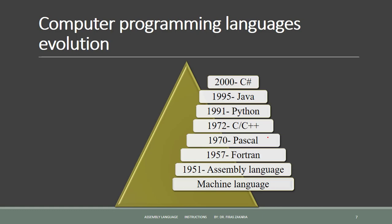We have to take an idea about the use of each language. Here in this diagram you can see a list of languages, starting from machine language and assembly language up to advanced high-level languages such as C, C++, Python, and Java.